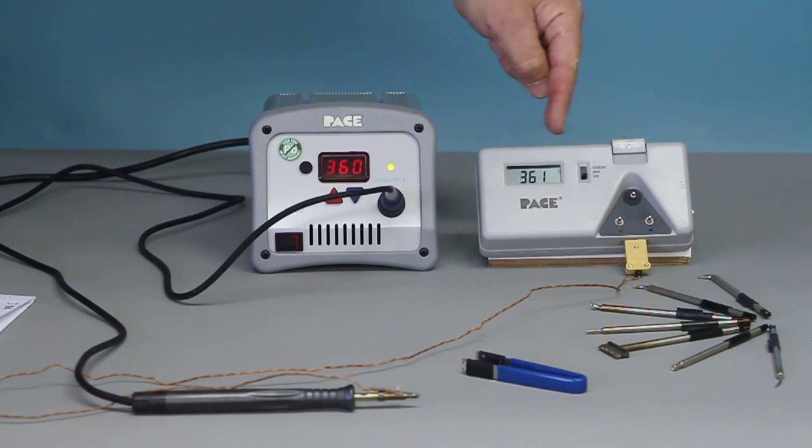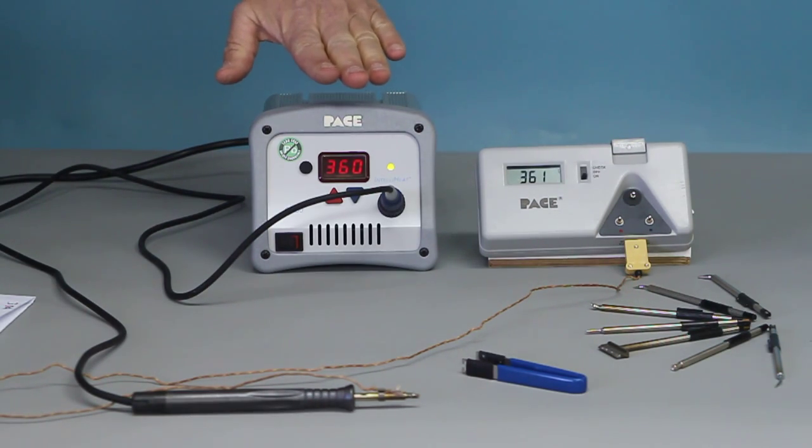As you can see here, we are within one or two degrees. PACE are a very stable, very good unit. And that system of calibration can be used on any of the digital stations. Thank you. Have a good day.